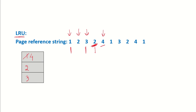Then there is a reference to 1 again, which is a page fault. Out of pages 4, 2, and 3: page 4 was just used, page 2 was also used recently, and page 3 was used the earliest. So 3 is replaced by 1. Then there is a reference to 3 again — out of pages 1, 2, and 4, page 2 was least recently used, so it is replaced by 3. Then there is a reference to 2 — out of pages 3, 1, and 4, page 4 is replaced by 2.